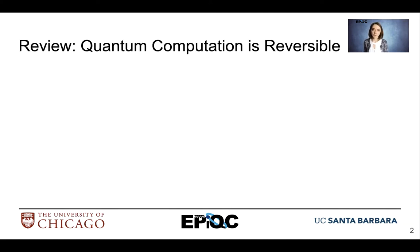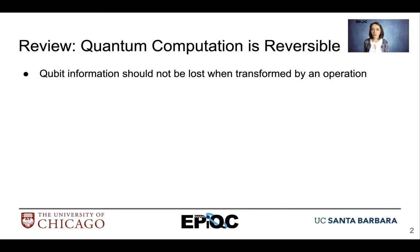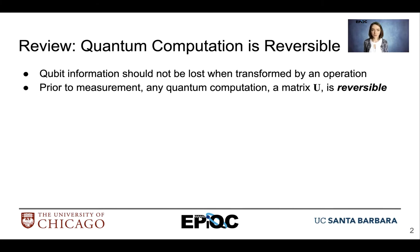To review, quantum computation is reversible. We don't want to lose any qubit information during computation. Before measurement or observing the value of qubits, we want to make sure that all functions represented by some arbitrary matrix U are reversible.